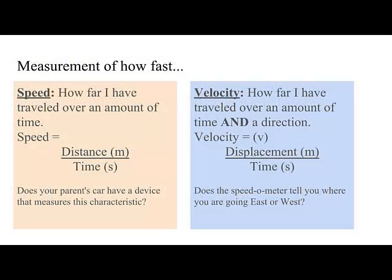What about measurements of how fast? Speed is how far I've traveled over an amount of time. Speed equals distance divided by time. In this case, distance is a scalar number. What about time? Does time have a direction? Time is a scalar number as well. So a scalar divided by a scalar is a scalar: speed. Does your parent's car have a device that measures this? Yeah, it's called a speedometer. The term meter means to measure. So a speedometer measures speed.